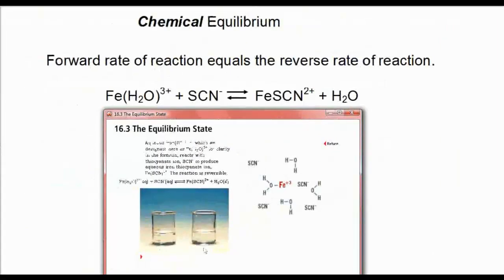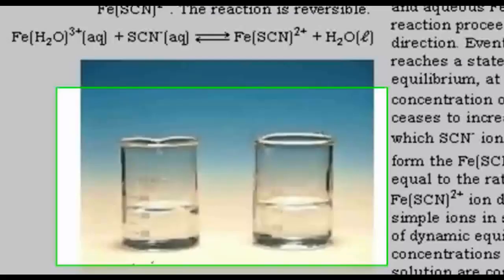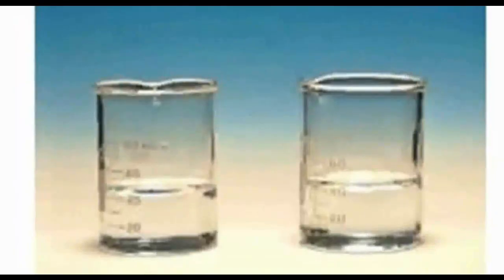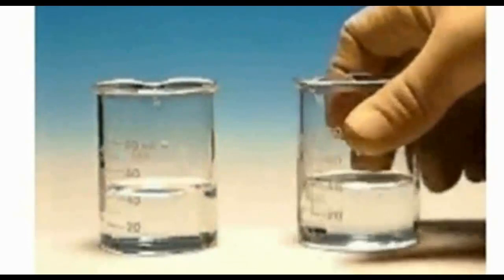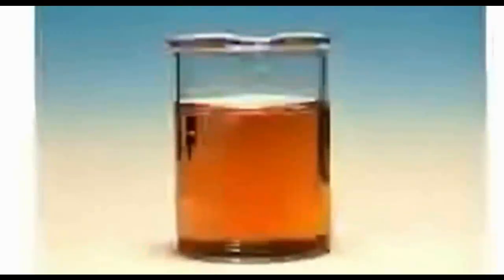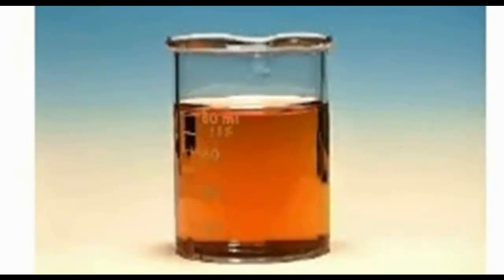Here's another animation off to the left. This animation shows you what happens when we mix iron and thiocyanate. When a solution of iron 3 nitrate is added to a solution of sodium thiocyanate, the red-orange thiocyanate complex ion is formed. Although the reaction looks complete, substantial amounts of iron ion and thiocyanate ion remain unreacted in solution.